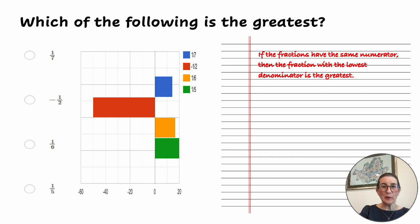Which of the following is the greatest? 1/7, negative 1/2, 1/6, or 1/5? Now, right off the bat, we can eliminate the negative number. When the remainder of the options are positive, the negative number cannot be the greatest. So let's get rid of that one.